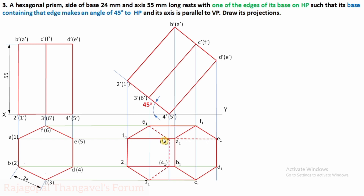Edge E₁ to 5₁ is invisible, and similarly D₁ to 4₁ is invisible from the top — both drawn as hidden lines. This completes the final answer. If you wish to check similar hexagonal prism problems where the axis makes an inclination with respect to HP, or corner on HP problems, check the description box for links. Remember that the edge 4 to 5 is touching HP and makes an angle of 45 degrees with respect to XY or HP.